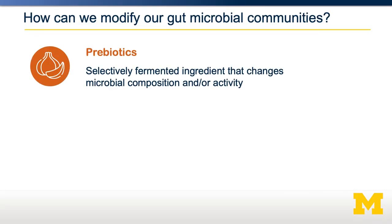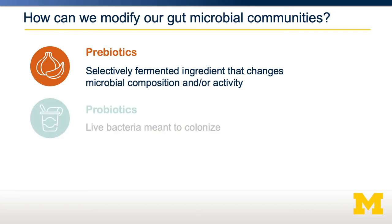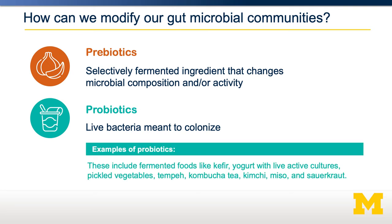We can modify our gut microbial communities through food via two general factors: prebiotics and probiotics. Prebiotics are selectively fermented ingredients that are generally not absorbed by the small intestine and make it to the large intestine, where they must also be fermentable to feed gut bacteria. Probiotics are actual live bacteria — found in fermented foods such as kefir or yogurt — meant to colonize our gut. If those bacteria survive the stomach and small intestine to reach the large intestine, they can grow and colonize, though they're still dependent on a good prebiotic food source.